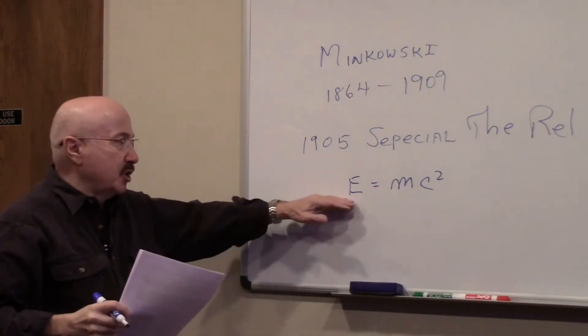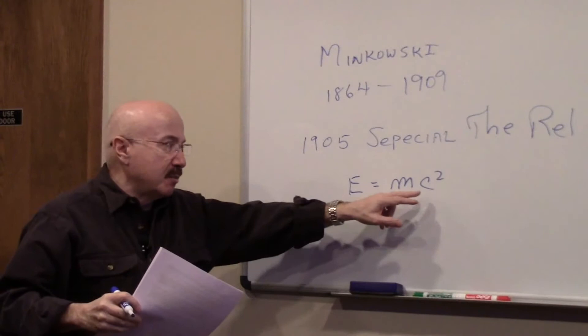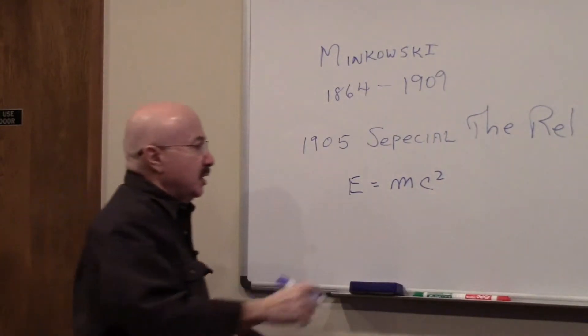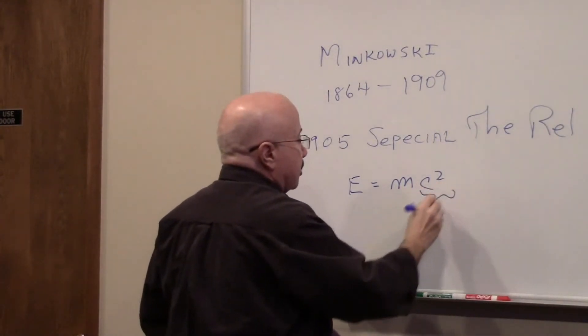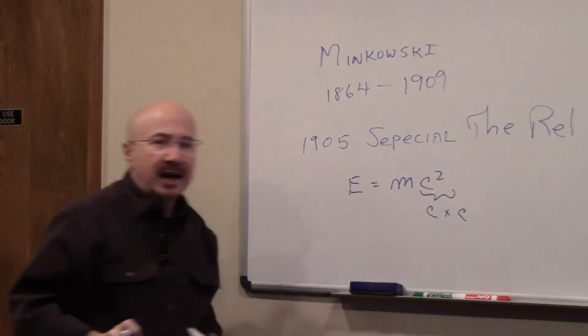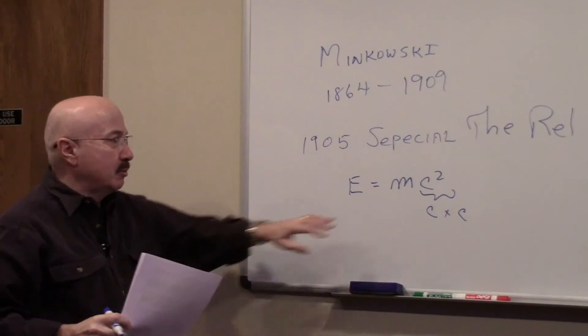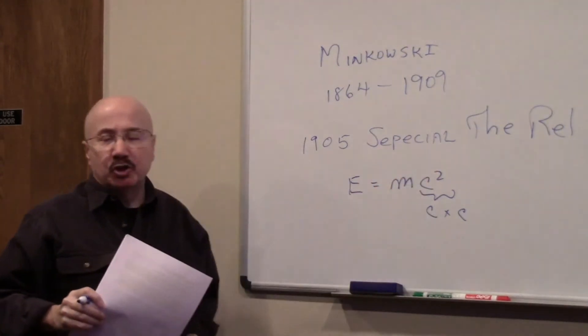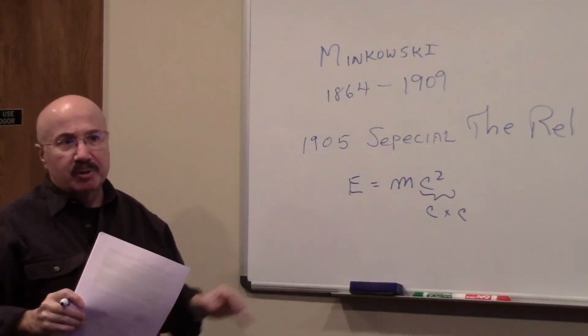This says energy is equal to mass times the square of the acceleration. And this is shorthand. This means c times c, the speed of light in the vacuum times the speed of light in the vacuum. And they shorthand it by putting a two there. And that's algebra.